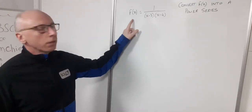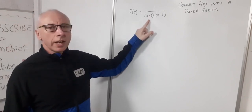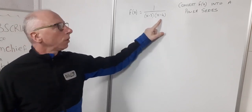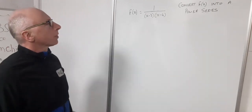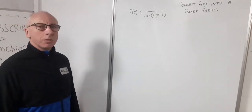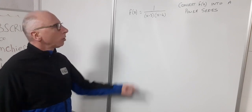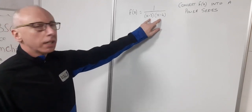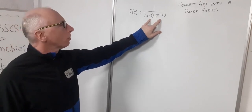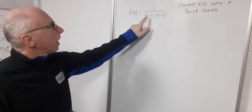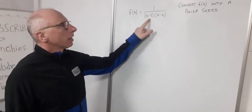We've got a question here: convert the function f(x) = 1 / [(x-3)(x-4)] into a power series. To convert this into a power series, the first place to start would be to try and split this into two different fractions using partial fraction decomposition. I wouldn't recommend expanding out this polynomial here — that would cause more of an issue.